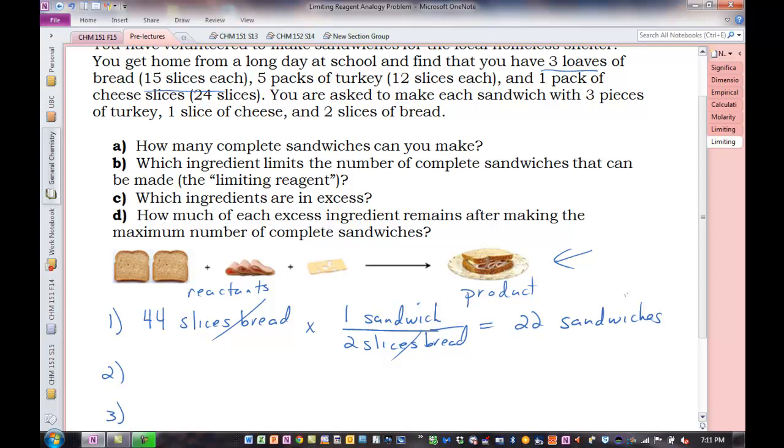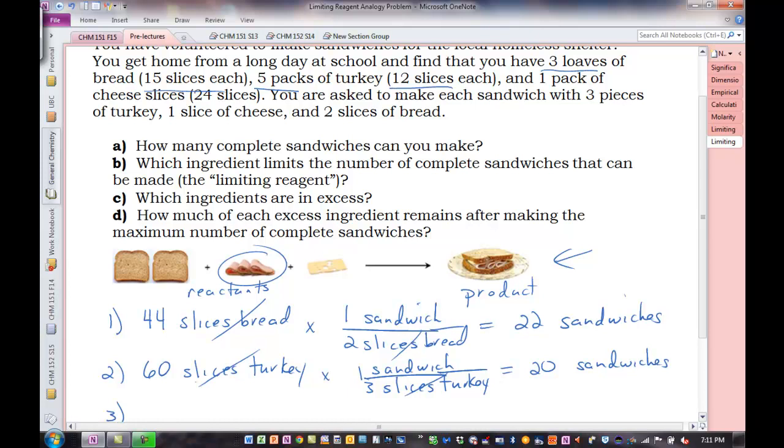Now let's go to the turkey. We have five packs of turkey with 12 slices each. Five times 12, we have 60 slices of turkey. How many slices per sandwich? Three slices. One sandwich, three slices of turkey. And that will give us 20 sandwiches.